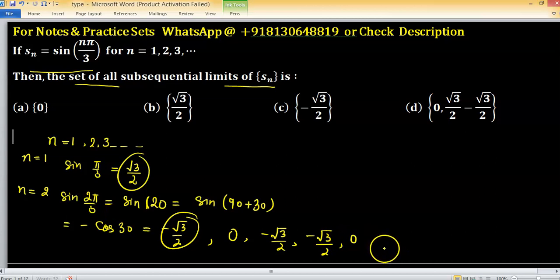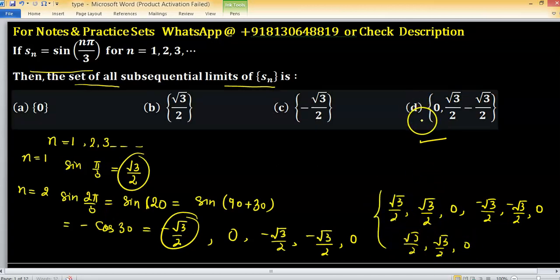So subsequential limits of Sn will be option D, because we have a set: root 3 by 2, again root 3 by 2, 0, then minus root 3 by 2, again minus root 3 by 2, then 0, and repeat again. So subsequential limits of Sn are given in option D.